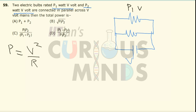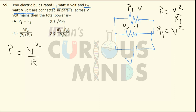The first bulb has power p1 and maximum voltage v1, and the second bulb has power p2 and maximum voltage v2. The resistance of the first bulb is R1 = V² / p1, and similarly the resistance of the second bulb is R2 = V² / p2.